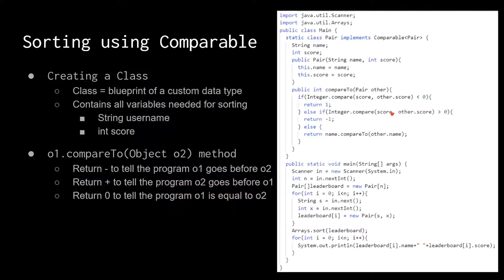This compare function returns positive if this score is greater than the other score. Right now we're doing the reverse — if it's positive, return negative; if it's negative, return positive — because we want the sort to be in descending order of score. The else case is called when scores are the same, and when scores are the same, we want to compare the strings of the names using name.compareTo(other.name), which returns negative if this name is alphabetically smaller.